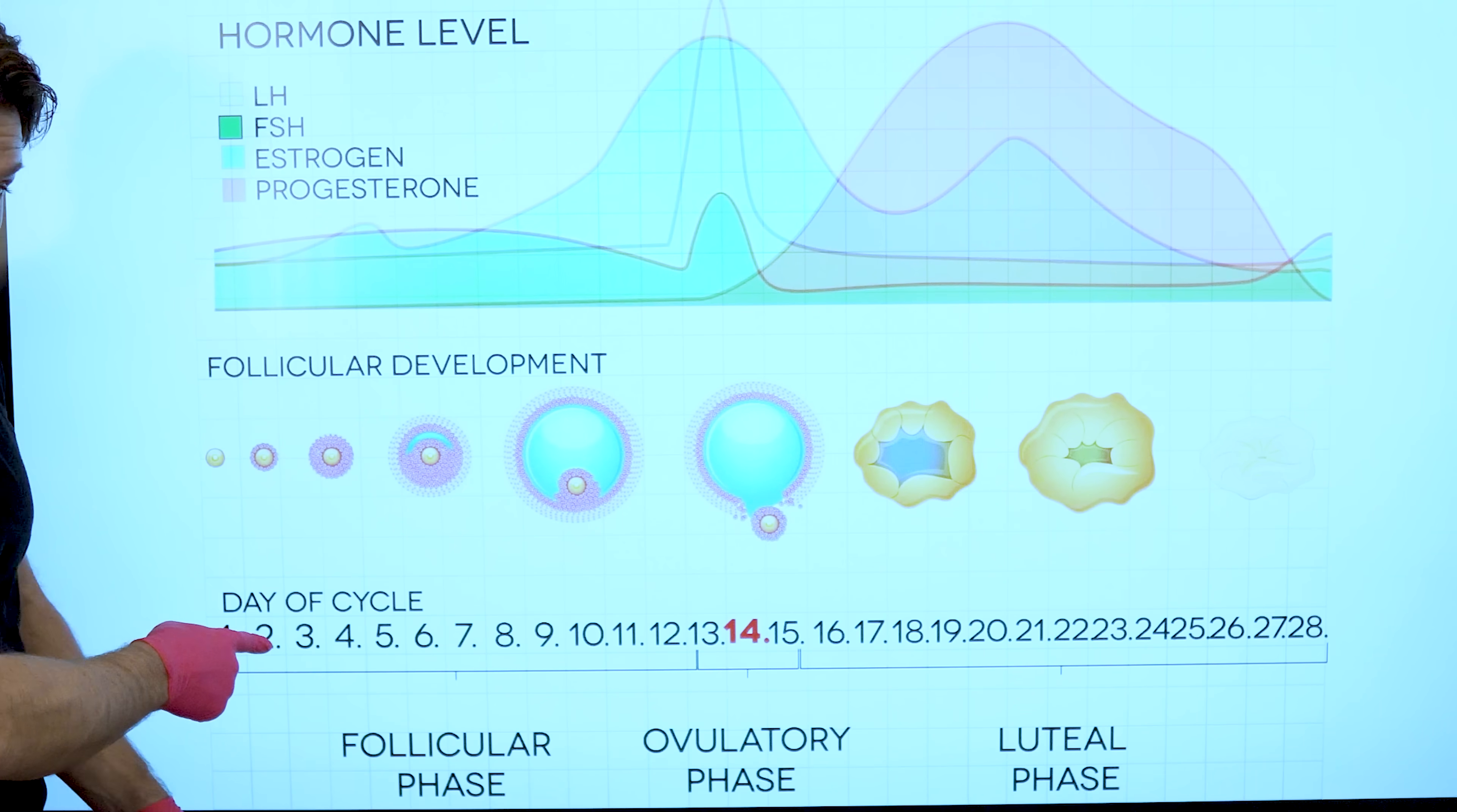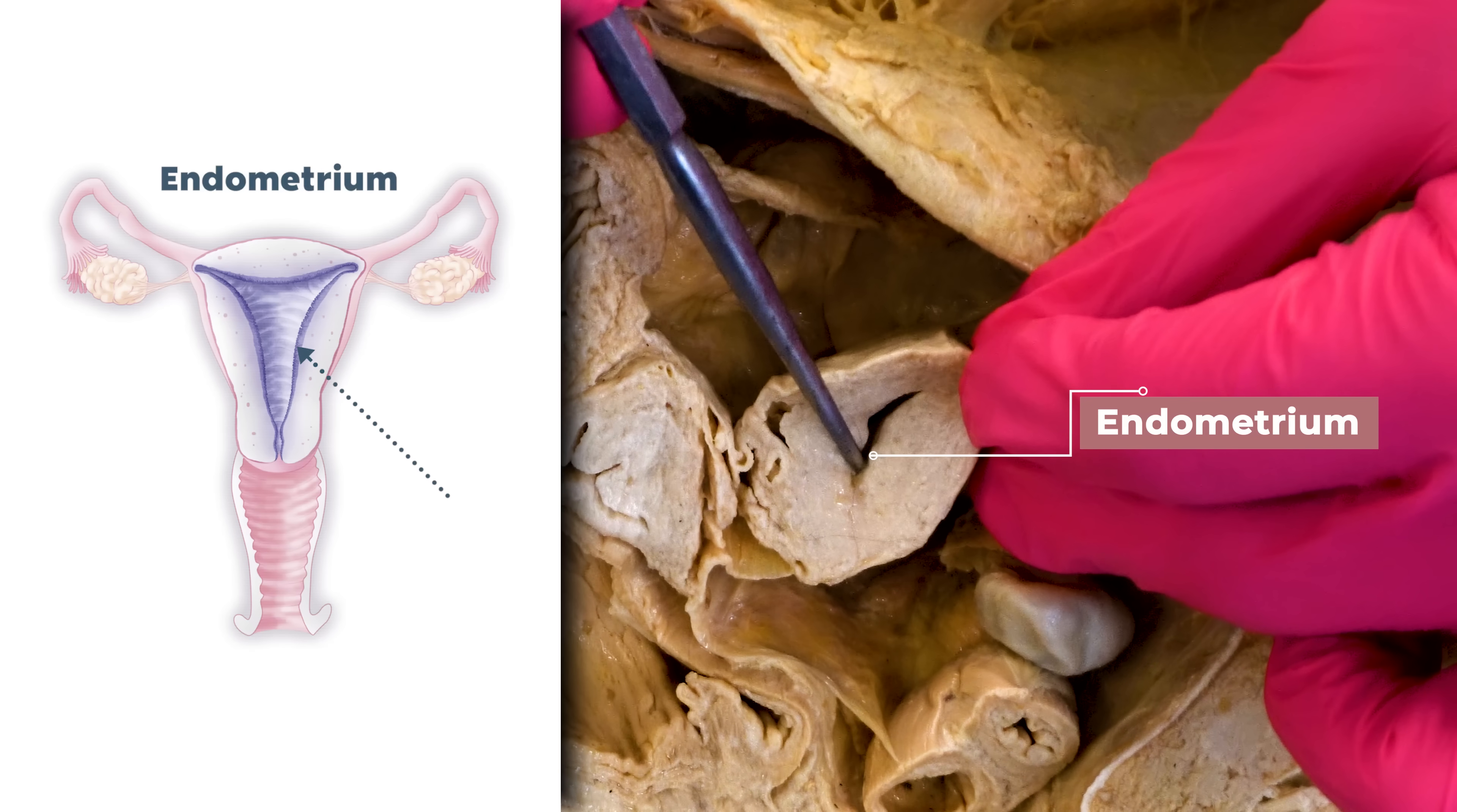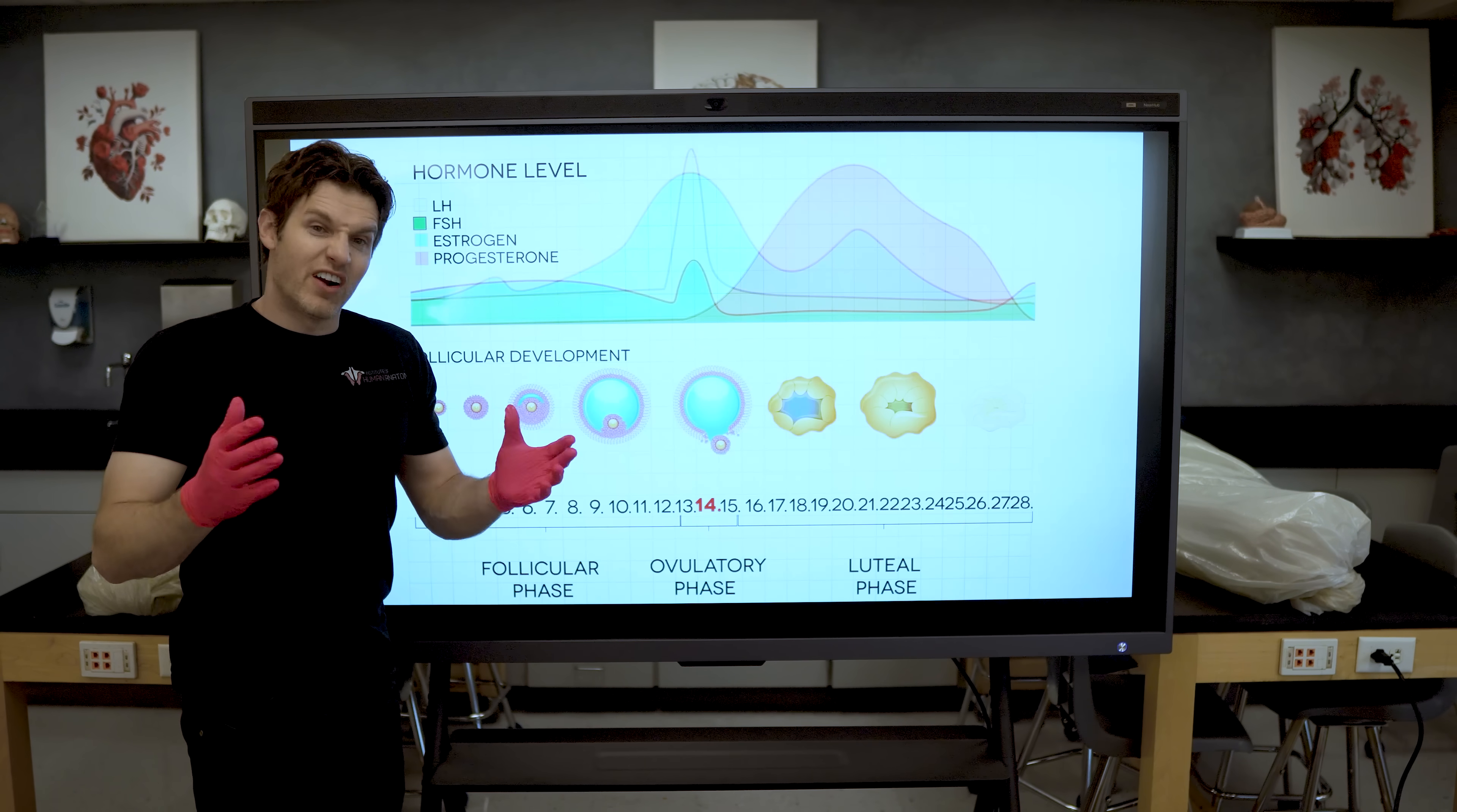So day one of the menstrual cycle starts with actual bleeding. Here is the uterus and what I'm probing right here is the smooth muscle of the uterus. Smooth muscle is under involuntary control. And right there is the endometrium, which is the inside lining of the uterus. During day one, menstruation takes place. The endometrium will actually slough off and the uterus will contract with that smooth muscle. And then the endometrial cells with the blood will actually move out the vaginal canal and that's what's essentially responsible for the menstrual bleeding. That can last anywhere from one to seven days.